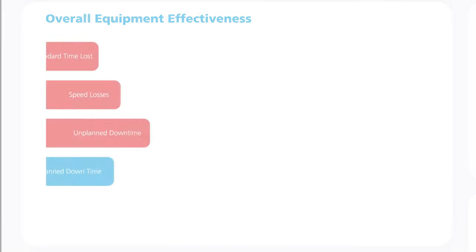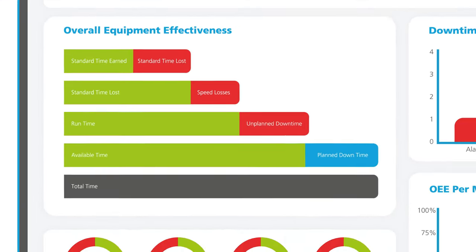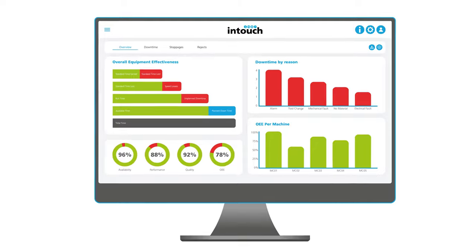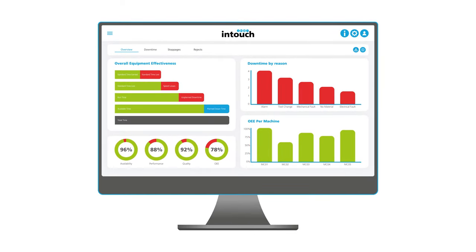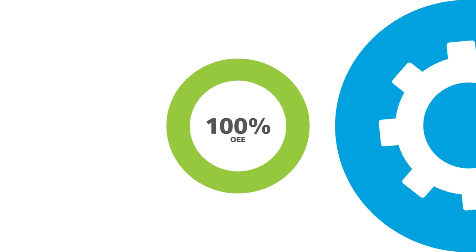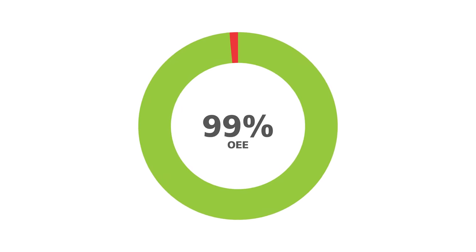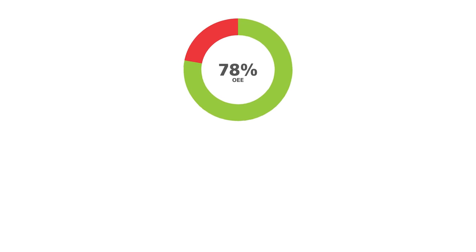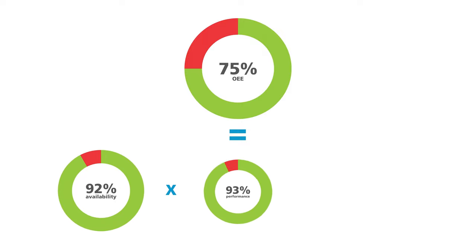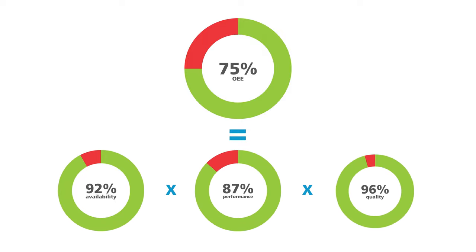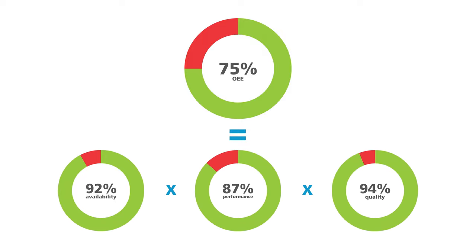The OEE staircase is a great tool to help you visualize where your losses are and help you drill down on your biggest inefficiencies. Join us next time where we will use the staircase to help us understand and calculate our OEE for our bucket production process. Thank you for watching.